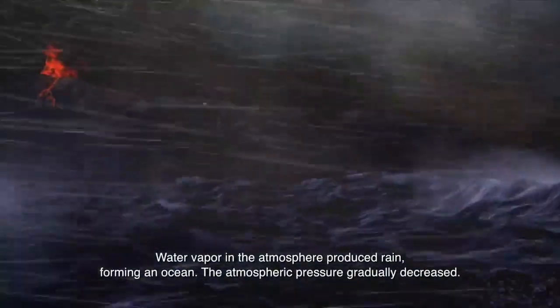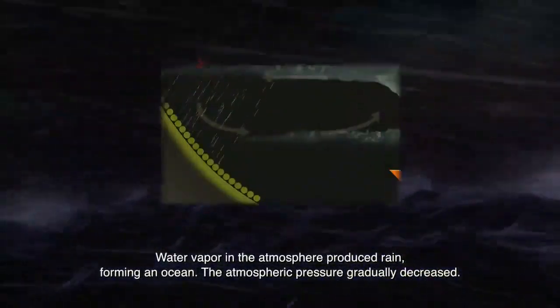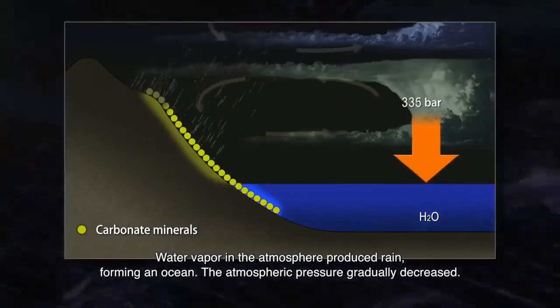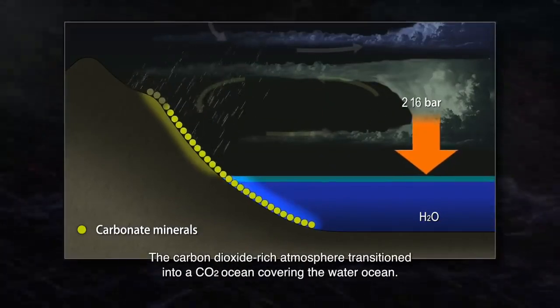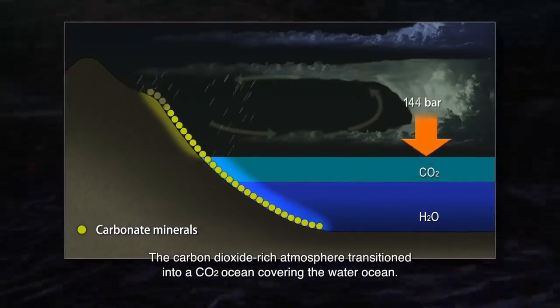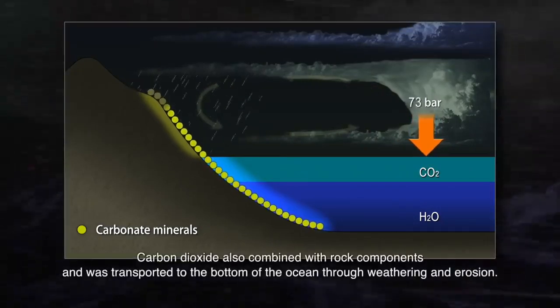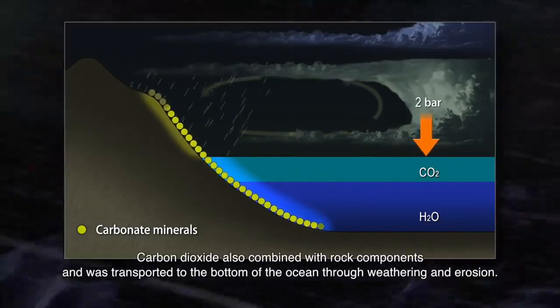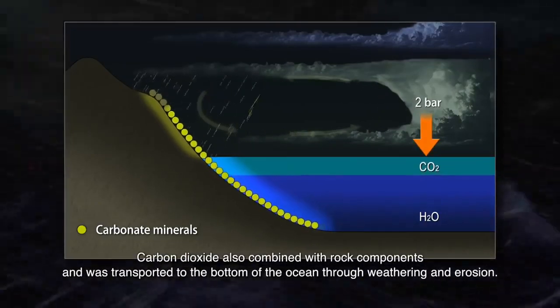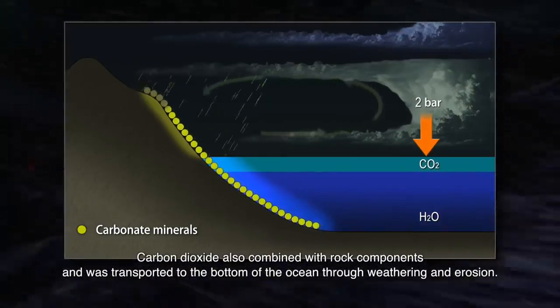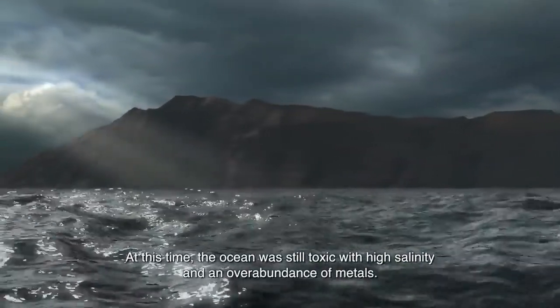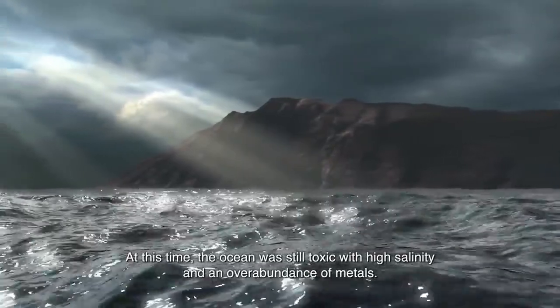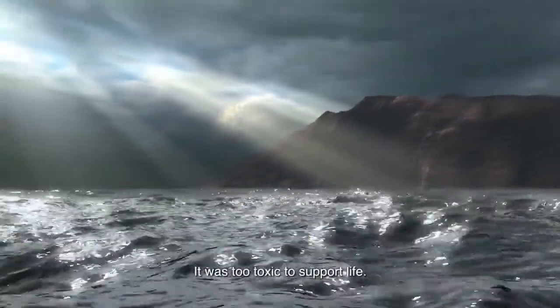Water vapor in the atmosphere produced rain, forming an ocean. The atmospheric pressure gradually decreased. The carbon dioxide-rich atmosphere transitioned into a CO2 ocean covering the water ocean. Carbon dioxide also combined with rock components and was transported to the bottom of the ocean through weathering and erosion. At this time, the ocean was still toxic with a high salinity and an overabundance of metals — too toxic to support life.